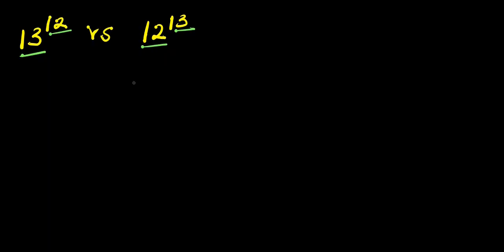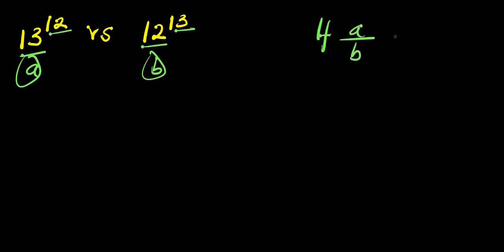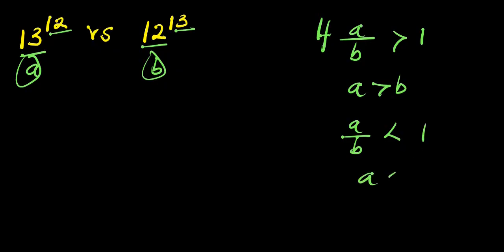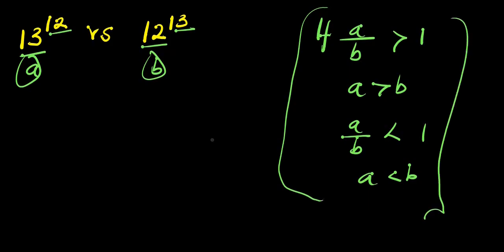We are going to make use of this technique: if A divided by B gives us a number greater than 1, that means A is greater than B. And if A divided by B gives us a number less than 1, that means A is less than B. This will help us know which is the bigger number without a calculator.